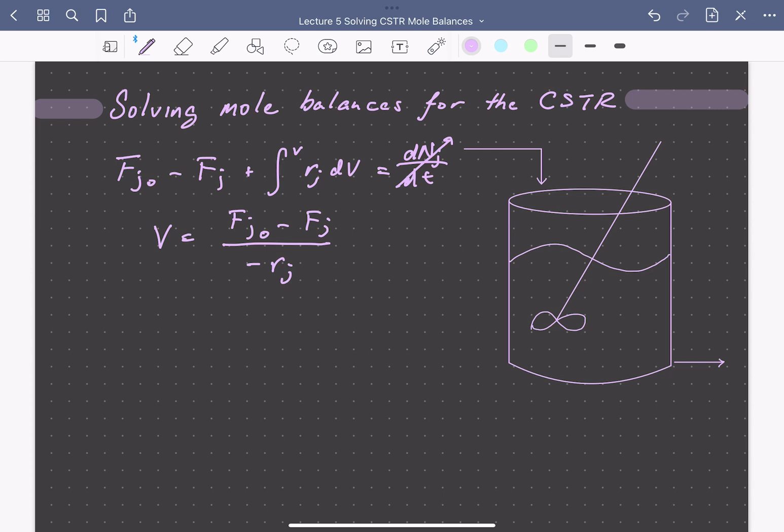Alternatively, we can write this in terms of volumetric flow rates and concentrations rather than molar flow rates. We can write that the volume is equal to the inlet volumetric flow rate times the inlet concentration, I'm doing this for some species A, minus that at the outlet over the rate of consumption of A.